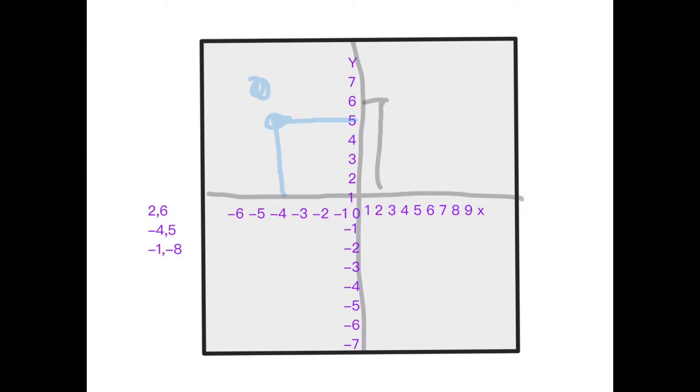And now, we need to find negative 1 comma negative 8. These are both negative numbers, so it should be in this region here. First, we find negative 1, and that's here. And negative 8, well, we don't have that. But let's go a little bit further than negative 7. And now, draw a line from negative 1 all the way to what's supposed to be negative 8. Here is the negative 1 comma negative 8.